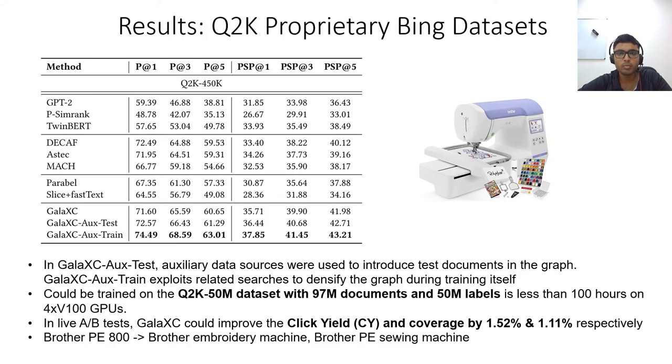This slide presents the results on the proprietary Q2K-450k dataset, where Galaxy is compared to generative models like GPT-2, Siamese models like TwinBERT, and graphical models like PCMREG. Galaxy is also compared to leading extreme classification methods. We also present results for Galaxy Aux test, where auxiliary data sources like related searches and co-mediated keyword logs could be used to introduce test documents in the graph, instead of approximate nearest neighbor search.